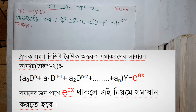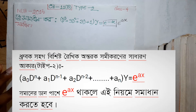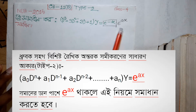I am done with e to the power of ax. This is a-naught D to the power n, plus a1 D to the power n minus 1, plus dot dot dot, plus a(n-1) into D, plus an into y, equal to e to the power ax. This is d/dx.